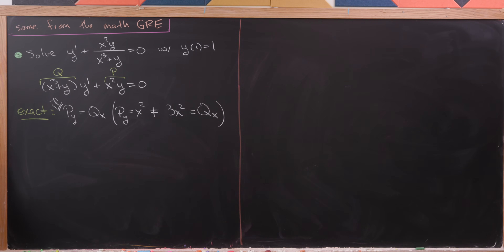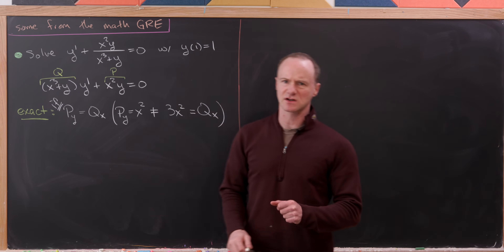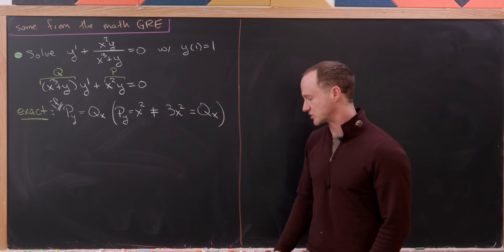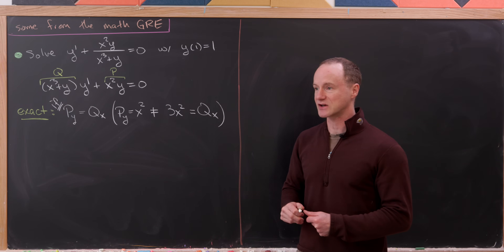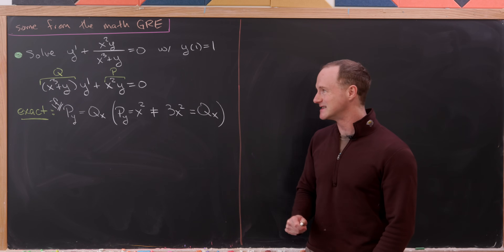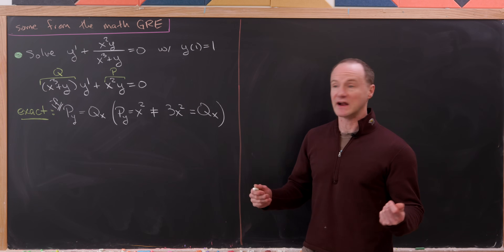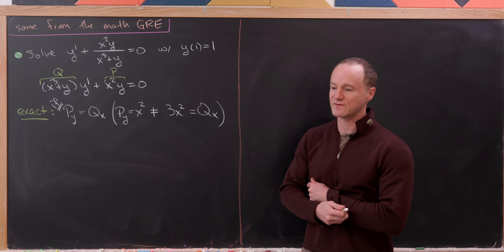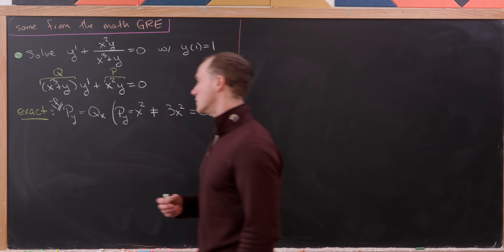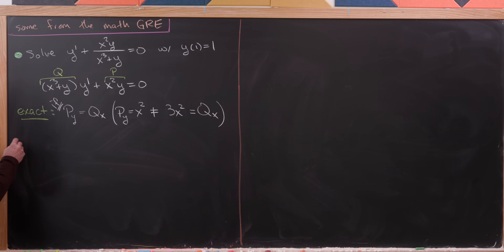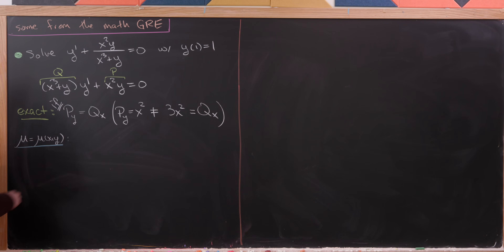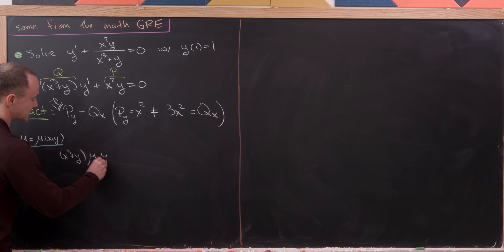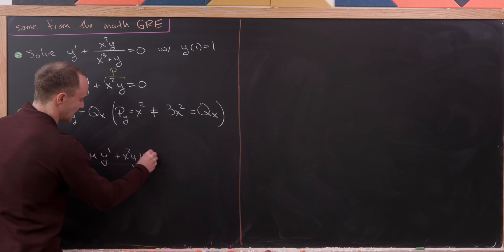If something looks close to being exact but isn't, we may multiply by an integrating factor μ to massage it until it is exact. Let's set μ = μ(x, y) as a function of perhaps both x and y. That turns our differential equation into (x³ + y)μ · y' + x²y · μ = 0, with new functions playing the role of P and Q.